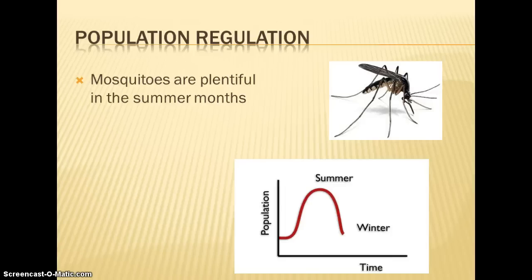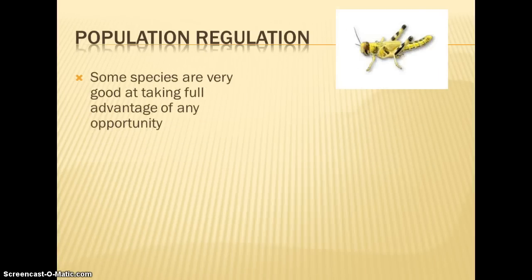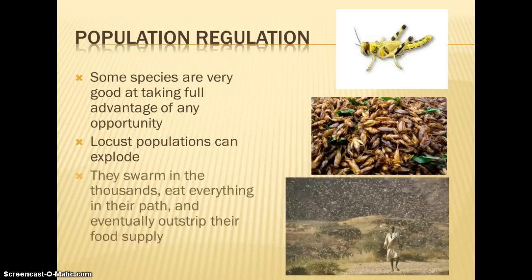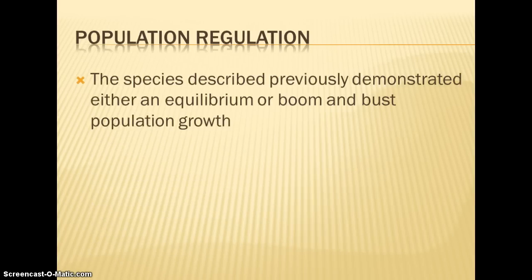Instead of equilibrium, sometimes we see a boom and bust. Mosquitoes are seasonal — they have higher populations in summer, then crash in autumn and are very few in winter. This is called a boom and bust. Some species can exploit resources or take advantage of opportunities quickly. Locusts are another example: they swarm in by the thousands, eat everything, and once their food supply is gone, they move on — another example of boom and bust.